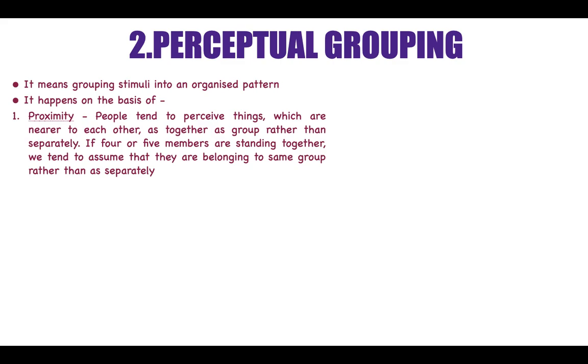When we talk about perceptual grouping, we group all these stimuli into organized patterns on different bases. The first basis is proximity, where people tend to perceive things that are nearer to each other as a group rather than separately. So if four or five members are standing together, even if they don't know each other, we tend to perceive that they belong to the same group.